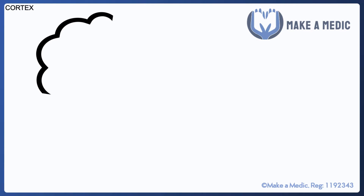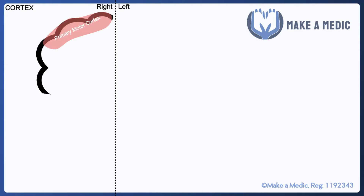Here we have the cerebral cortex and I've divided it down the middle so we can easily visualize which side is right and left, and see exactly when the pathway crosses the midline. We have the primary motor cortex which is situated in the frontal lobe, right at the posterior most aspect of the frontal lobe just anterior to the central sulcus.